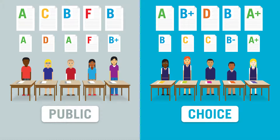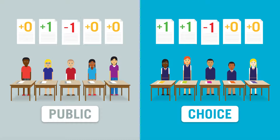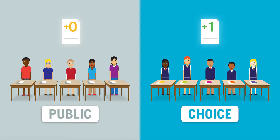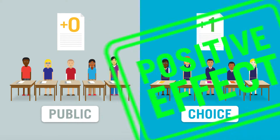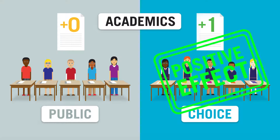Researchers compare the new test scores to the baseline scores to learn which students got better, worse, or stayed the same. Then they average the change for each group and compare them. Now, with some level of confidence, researchers can say whether this school choice program had an overall positive, negative, or neutral effect on students' academic performance.